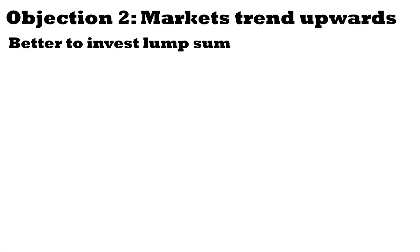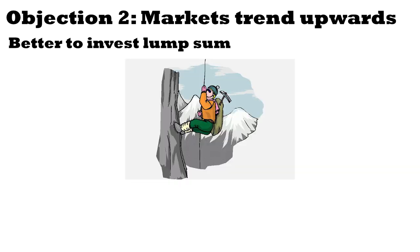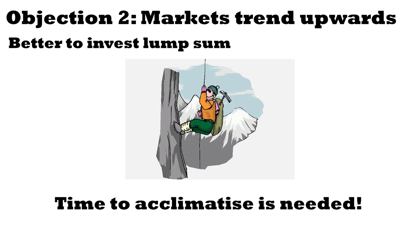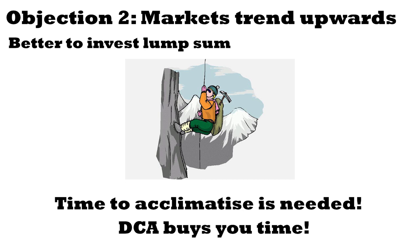The second common objection is that since markets trend upwards, it's better to invest a lump sum. Here's an analogy to demystify that: when climbing Mount Everest, do you hike straight to the top, or do you go gradually to base camp to acclimatize? It's the same concept with market downturns. Dollar cost averaging buys you time — you are acclimatizing, putting your toes in the water, not jumping in without being fully versed. You go to base camp first. That's the real value of dollar cost averaging.